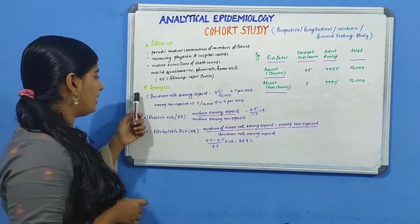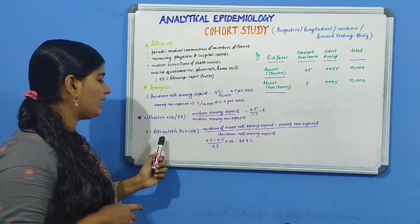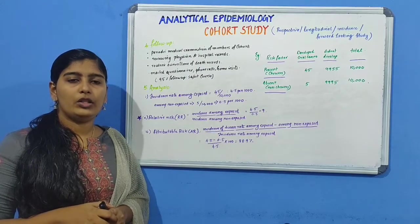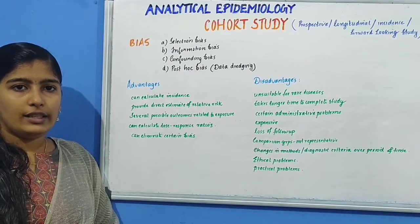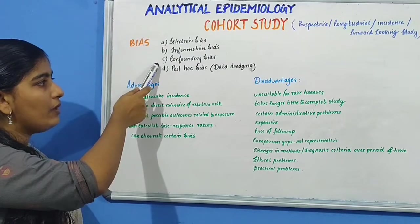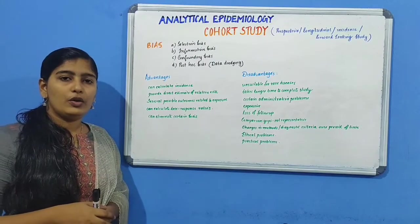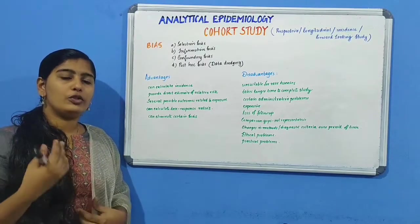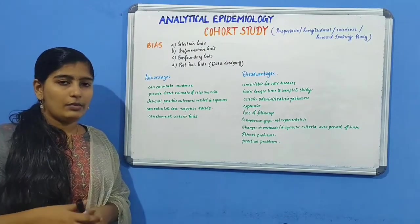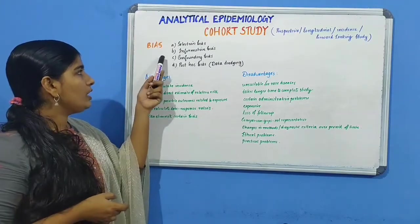So the fifth and final step — analysis — involves calculating incidence rate, relative risk, and attributable risk. Now moving on to bias in cohort study. There are four important types of bias: selection bias, information bias, confounding bias, and post hoc bias. In selection bias, for example, many people originally selected in the cohort might refuse to participate — that is non-consent bias — or there may be loss of follow-up.